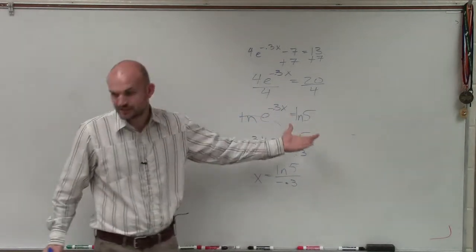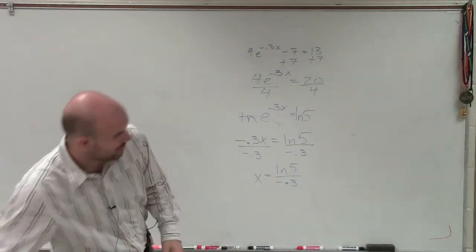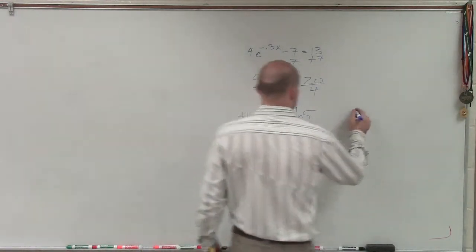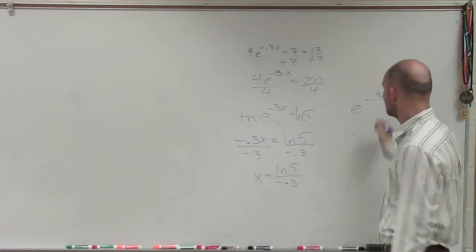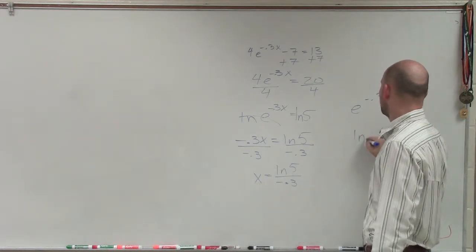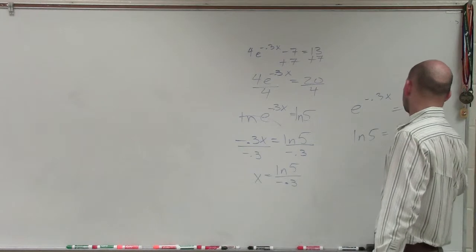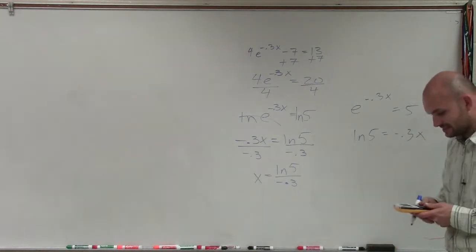You could also just take this and convert it to your logarithmic form, e to the negative 0.3x equals 5. Convert that to logarithmic form would be ln of 5 equals negative 0.3x, which obviously you guys will see is going to be the exact same.